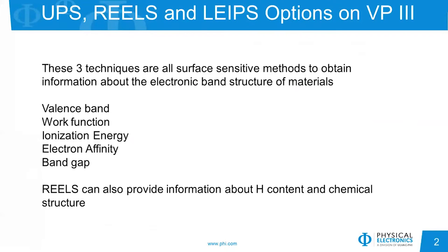These three techniques are all very surface sensitive and they provide information on the electron band structure of materials. Parameters such as valence band, work function, ionization energy, electron affinity, and the band gap can all be determined by a combination of these techniques. REELS can also provide some additional information on things like hydrogen content and chemical structure.